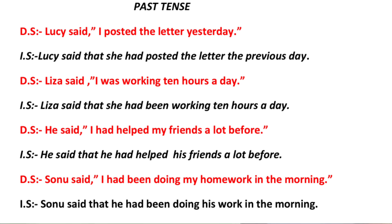Lisa said, 'I was working ten hours a day.' In indirect speech: 'Lisa said that she had been working ten hours a day.' 'I' refers to Lisa, so it changes to 'she'. Past progressive changes to past perfect progressive: 'had been working'. Another example: He said, 'I had helped my friends a lot before.' In indirect speech: 'He said that he had helped his friends a lot before.' There is no change because it is already past perfect.